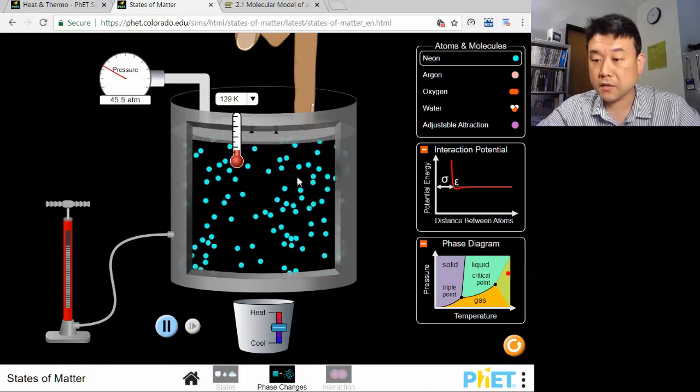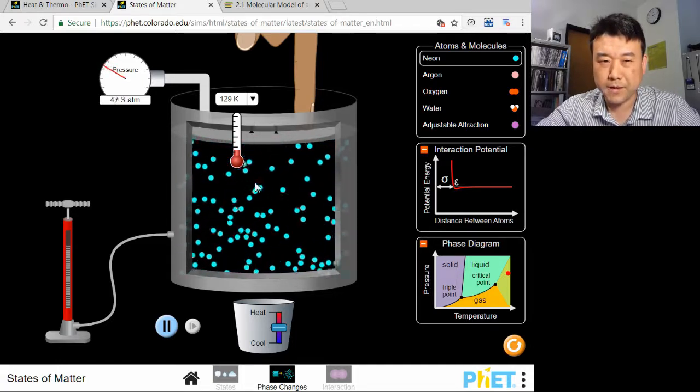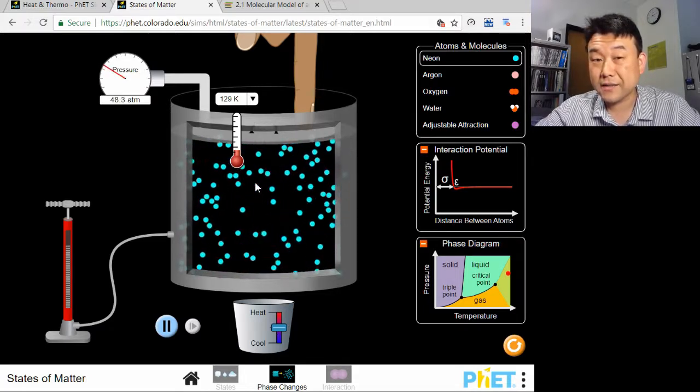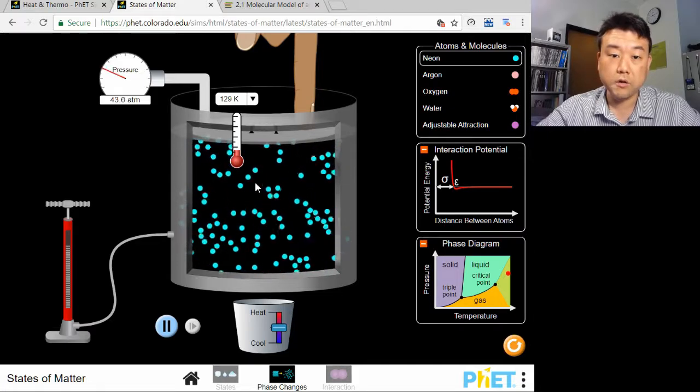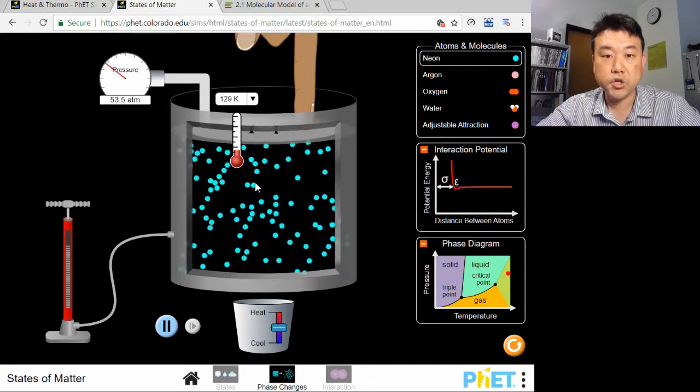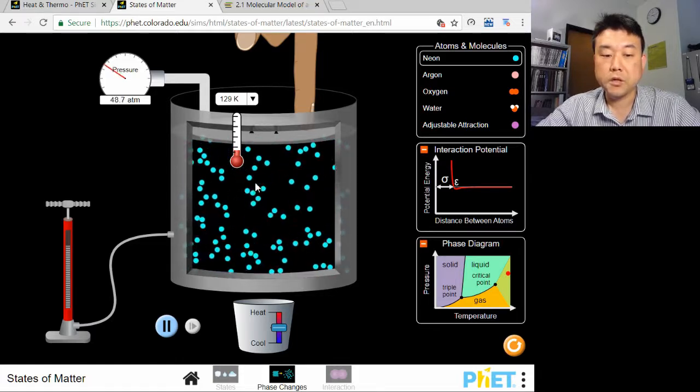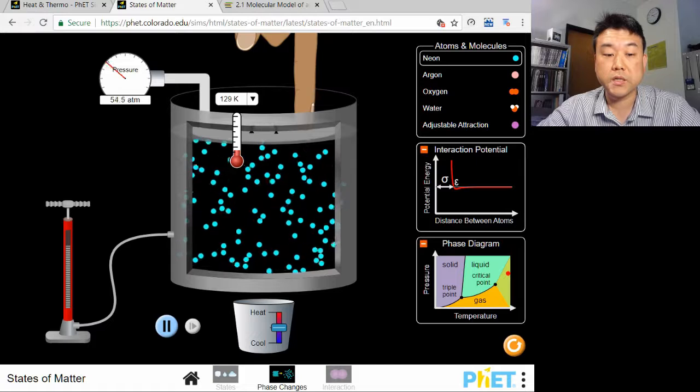That would be all these particles bouncing from the lid. Each particle bouncing from the lid delivers some impulse, change of momentum to the lid, which can be translated to the force on the lid from the particles once you know the rate of collision. This is the origin of pressure in a sample of gas, the collisions of gas particles with the container, which leads to the pressure.